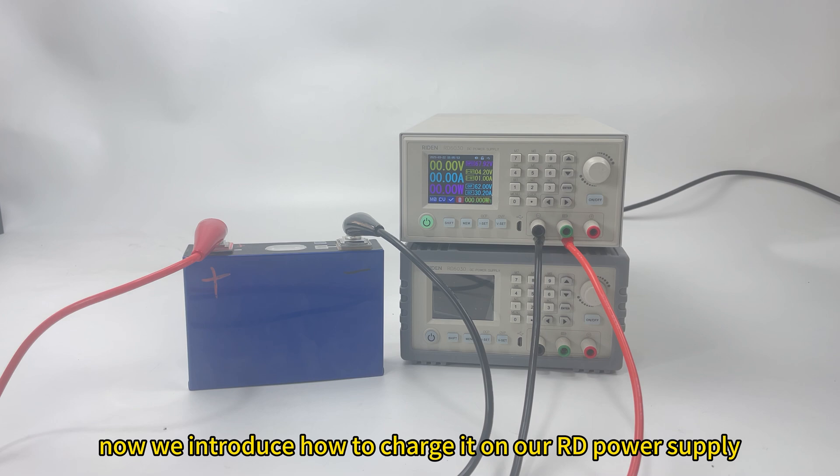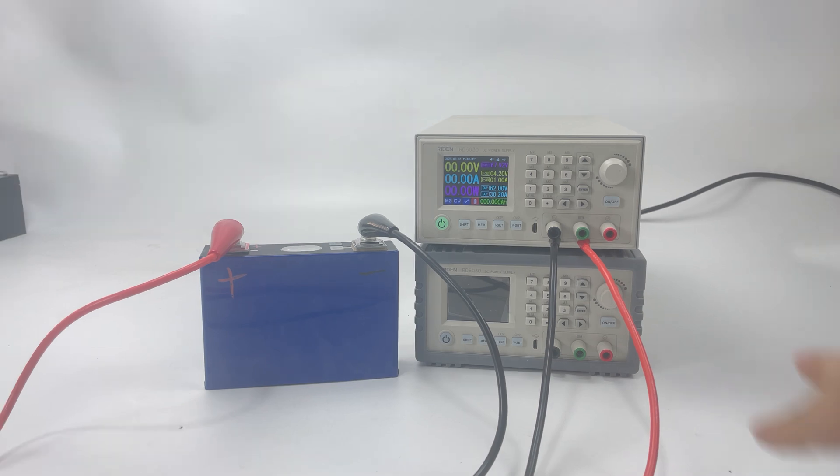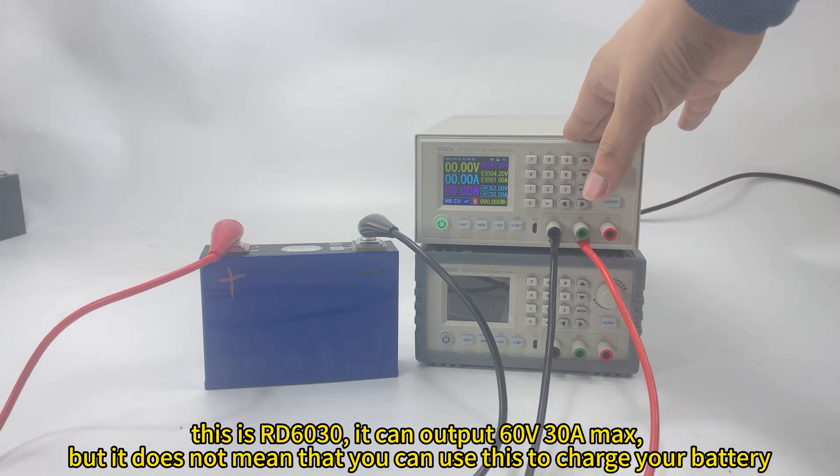Now since we already talked about the charging voltage and the current for the battery, then it is how to charge it on our RD power supply. Now it is an RD6030.